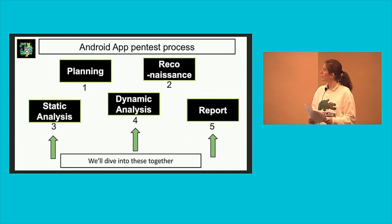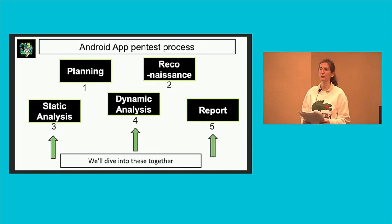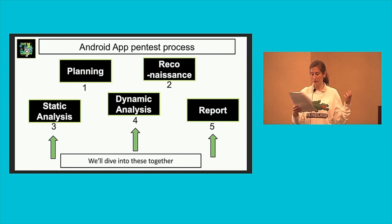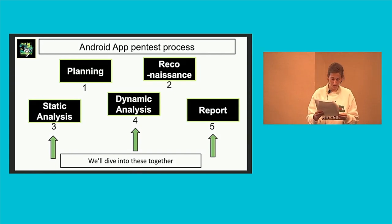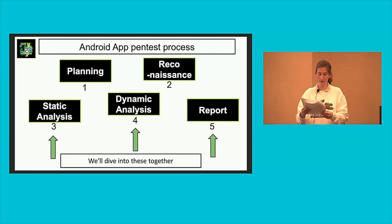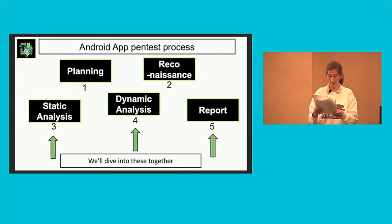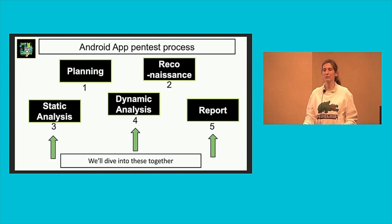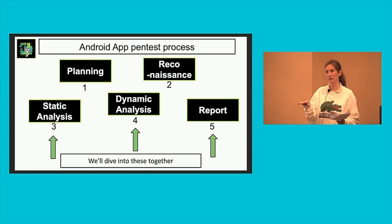Let's dive into Android App Pen Test. First, we have to define the legal matters with the customer — that's the planning phase, just like any pen test. Then you have the reconnaissance phase: for Android apps, you could check info on the company on the Google Store. Then you have static analysis, where you look at the code and check for specific elements. And dynamic analysis, where you intercept traffic and look for vulnerabilities. Finally, you make a report to present and explain the findings. I will go into more detail on these phases later.